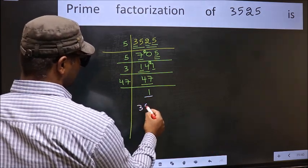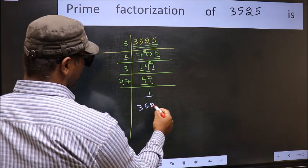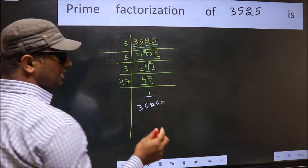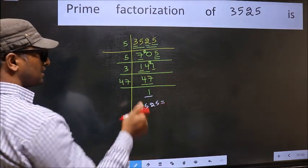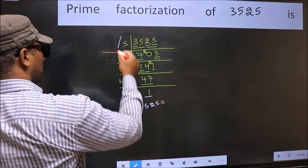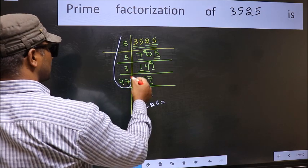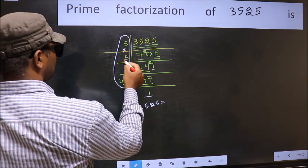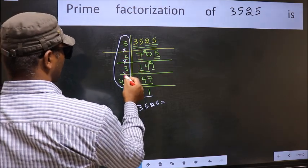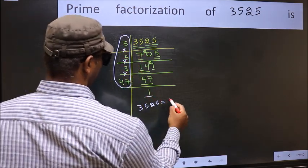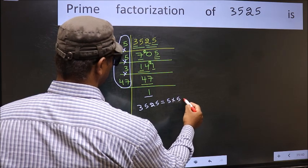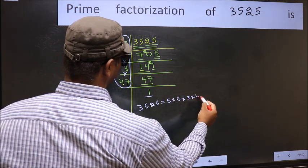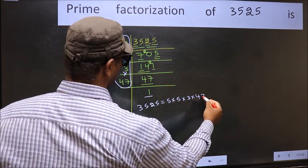So the prime factorization of 3525 is the product of these numbers: 5 × 5 × 3 × 47.